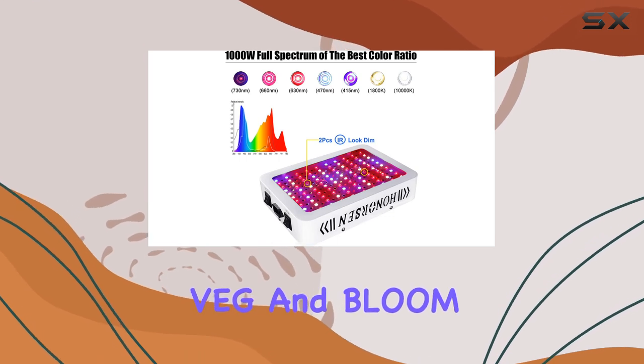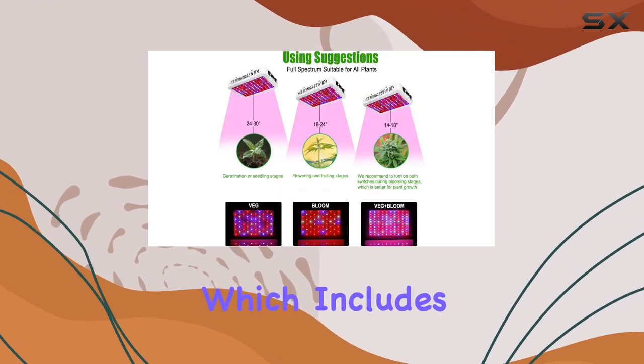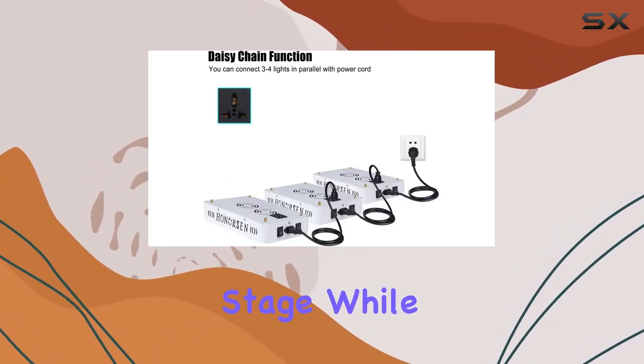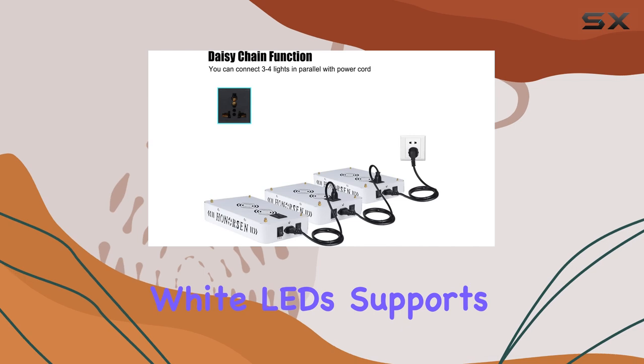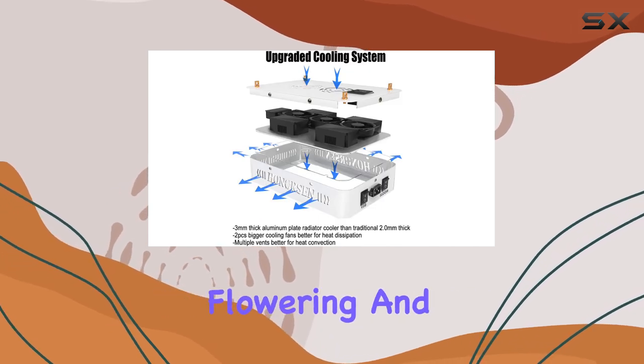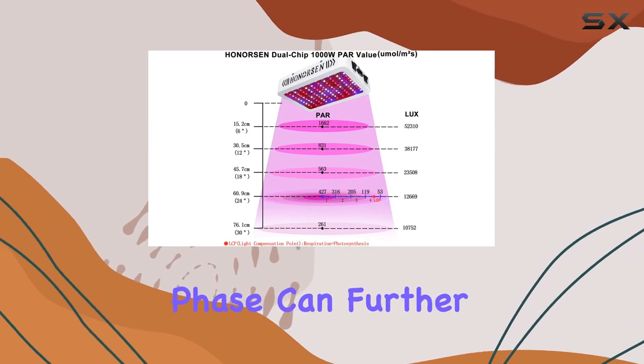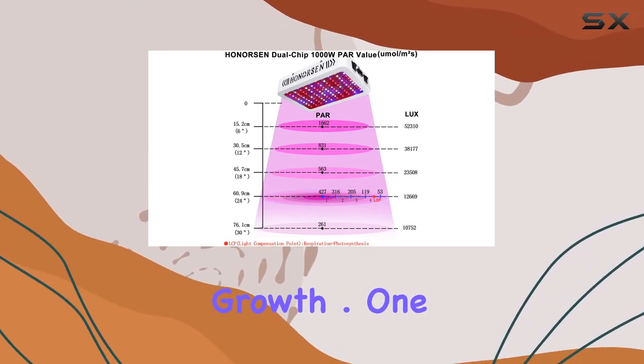The light comes with two switches, VG and Bloom. The VG switch, which includes blue and white LEDs, is perfect for the vegetative stage, while the Bloom switch with red and white LEDs supports flowering and fruiting. Running both switches simultaneously during the blooming phase can further boost your plant growth.